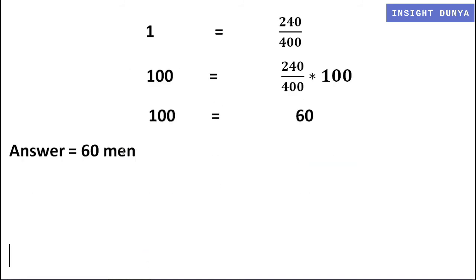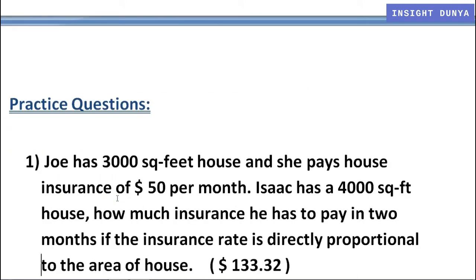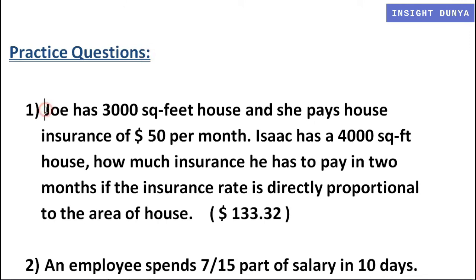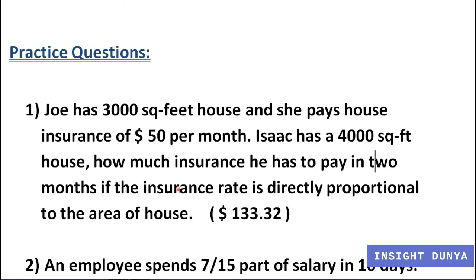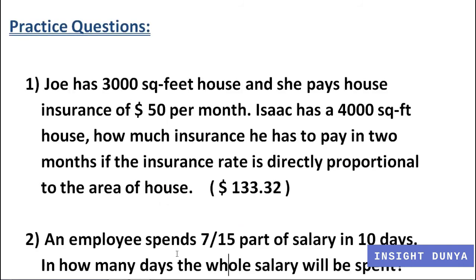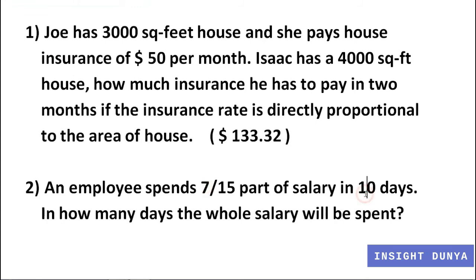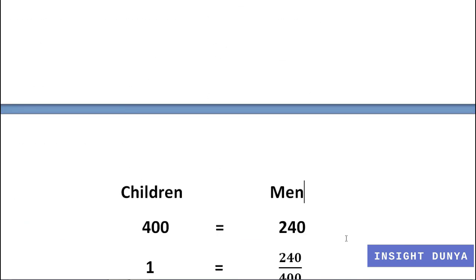Here are the practice questions for this video. Question 1: Joe has a 3,000 square feet house and pays house insurance of $50 per month. Isaac has a 4,000 square feet house — how much insurance does he pay in two months if the insurance rate is directly proportional to the area? Question 2: an employee spends 7 over 15 part of salary in 10 days — in how many days will the whole salary be spent? If you learned something, please share, like, and subscribe to our channel.